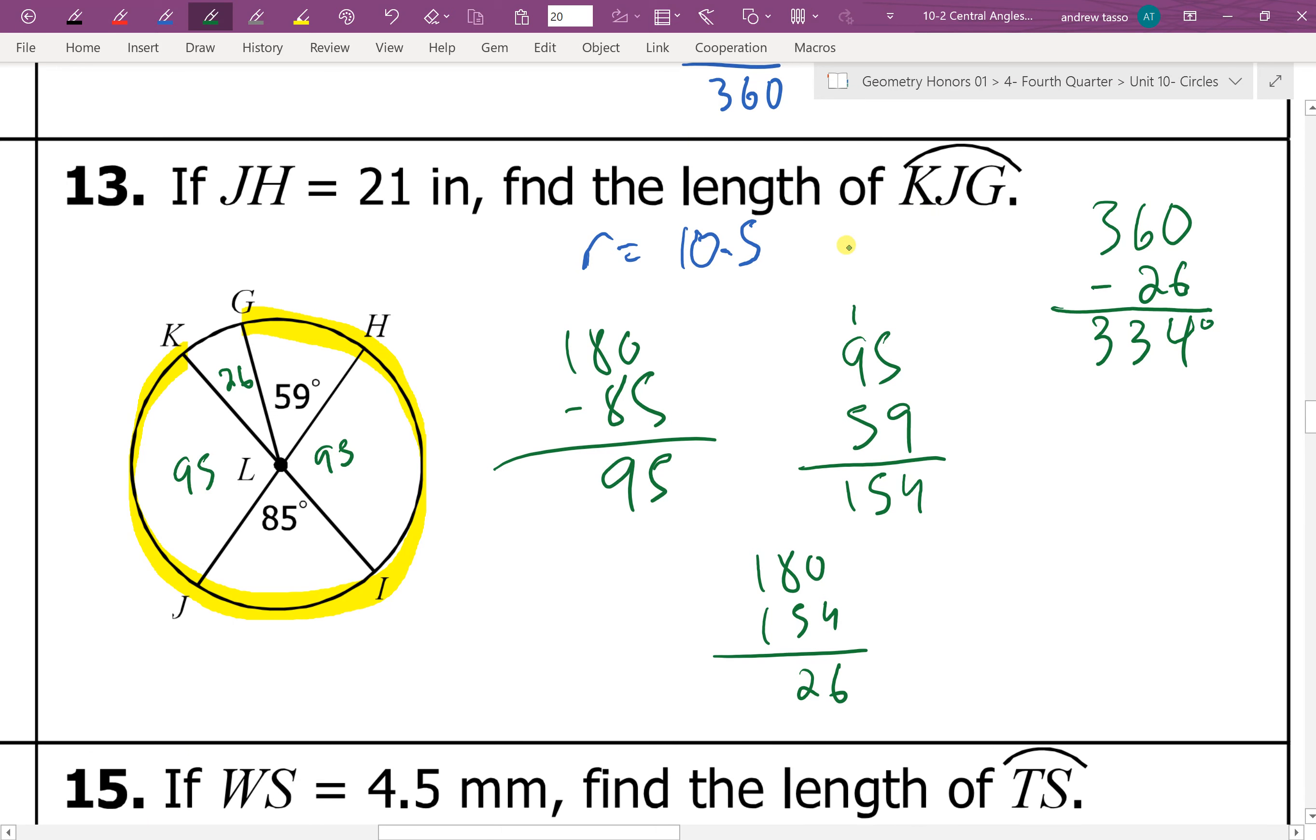But they're not asking for the measurement of arc KJG. Then there would be a little m in front. Instead, they're asking for the arc length. So I use my formula L equals x over 360 times 2 pi r.